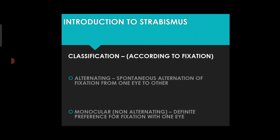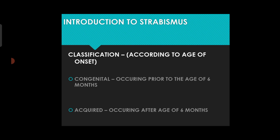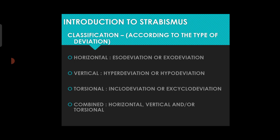Classification according to fixation: alternating — spontaneous alternation of fixation from one eye to the other; and monocular or non-alternating — definite preference of fixation with one eye. Classification by age of onset: congenital, occurring prior to six months of age; acquired, occurring after six months. Classification by type of deviation: horizontal, vertical, torsional, and combined. Horizontal includes eso and exo; vertical includes hyper and hypo deviation; torsional includes incyclo and excyclo deviation; combined involves a mix.